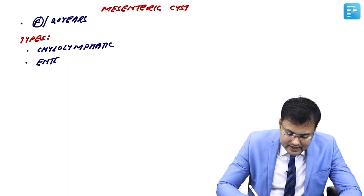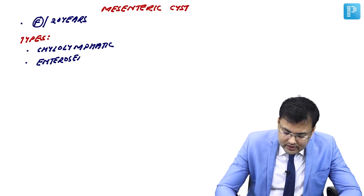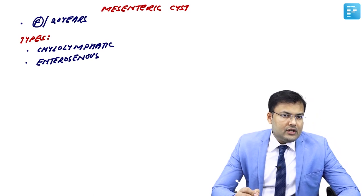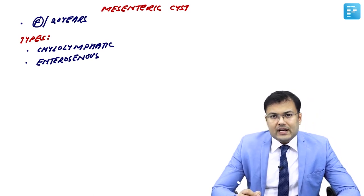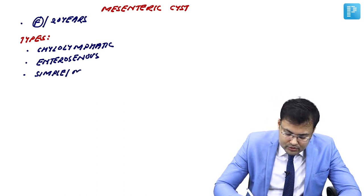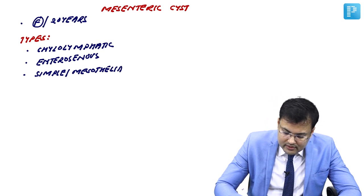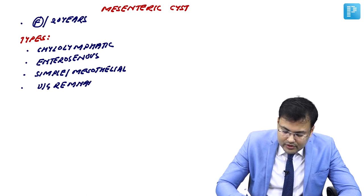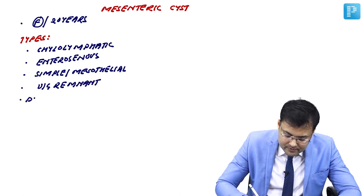The third type is simple or mesothelial, and the fourth arises from urogenital remnant. And there is also dermoid. These are the types of mesenteric cyst.